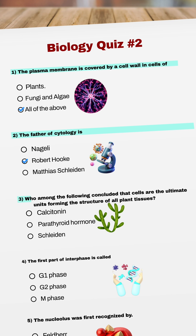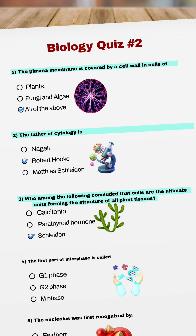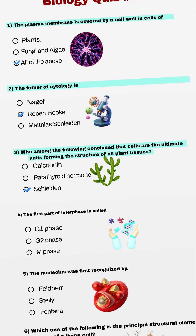Question 3. Who among the following concluded that cells are the ultimate units forming the structure of all plant tissues? Question 4. The first part of interphase is called G1 phase.